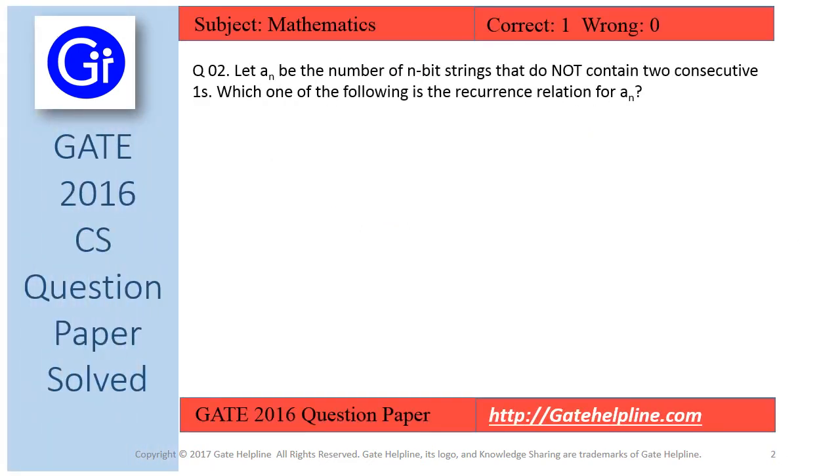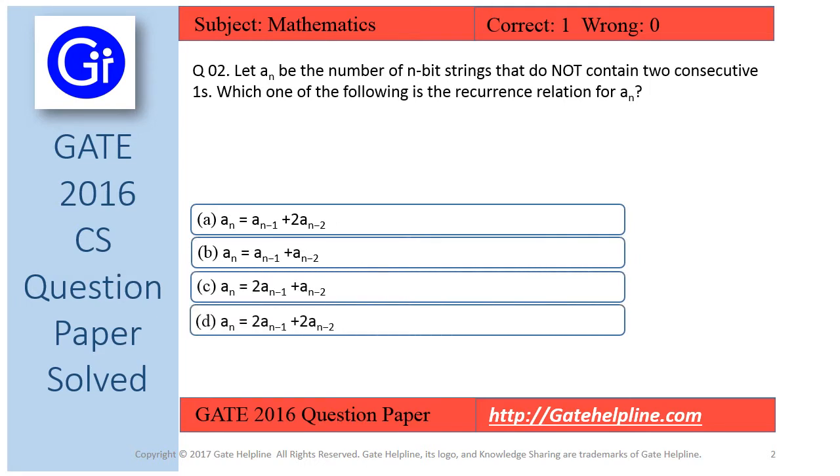Question number 2 is: let a_n be the number of n-bit strings that do not contain two consecutive ones. Which one of the following is a recurrence relation for a_n? The options are a, b, c, and d.